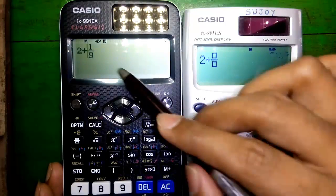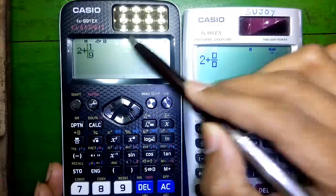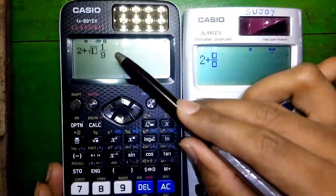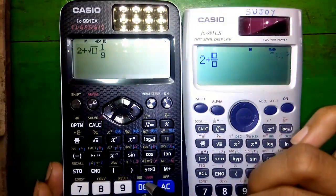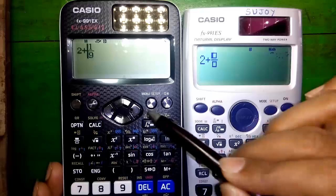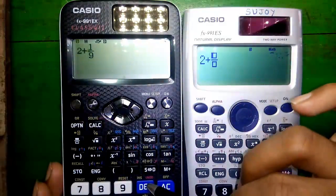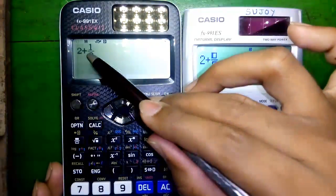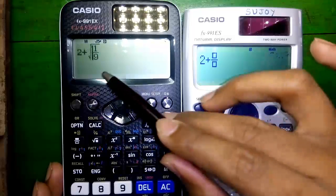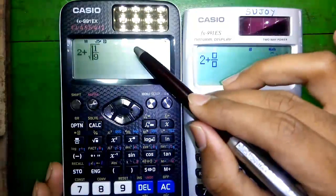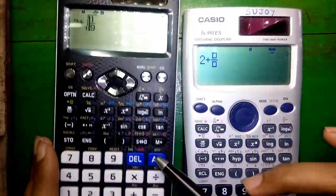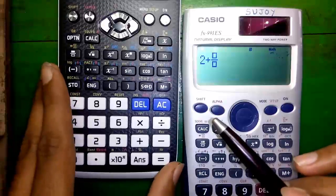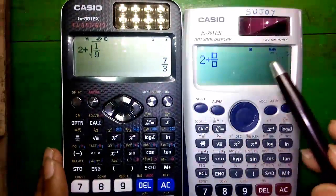Now if I want to enter root over 1 by 9, if I press this root button it will just bring the template. Press del. Now press Shift and del for the insert operator — the cursor will change. Now press the root button and it will cover the 1 by 9. Press equals to get the answer, which is 7 by 3.